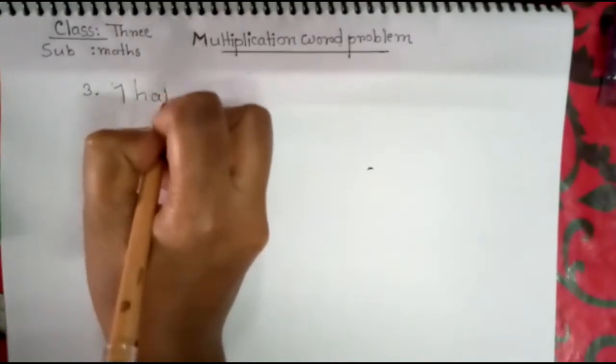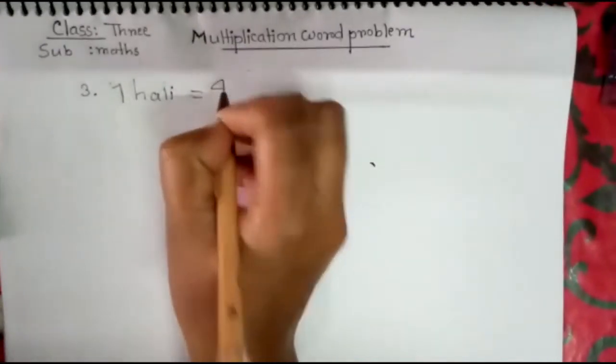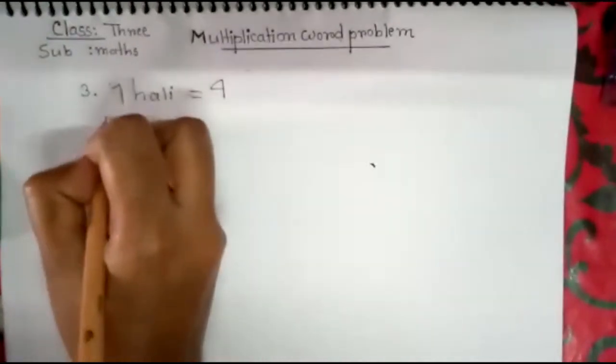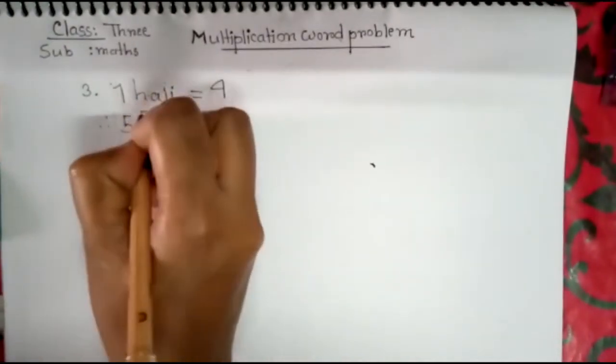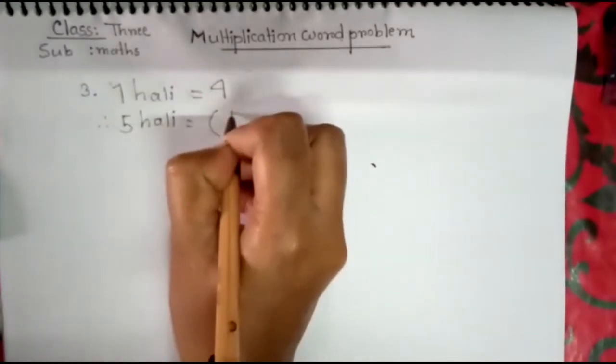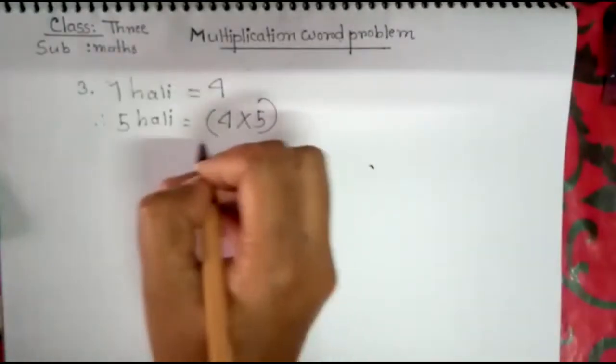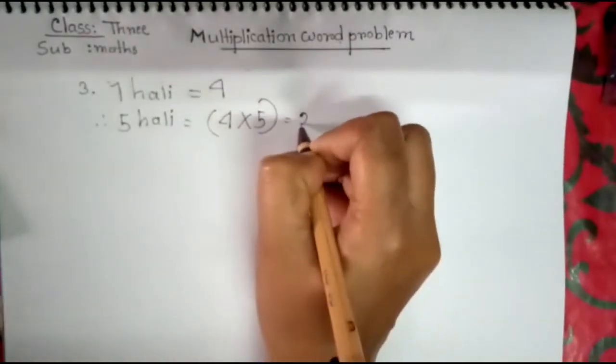One hali is equal to four. Five hali is equal to four times five, is equal to twenty.